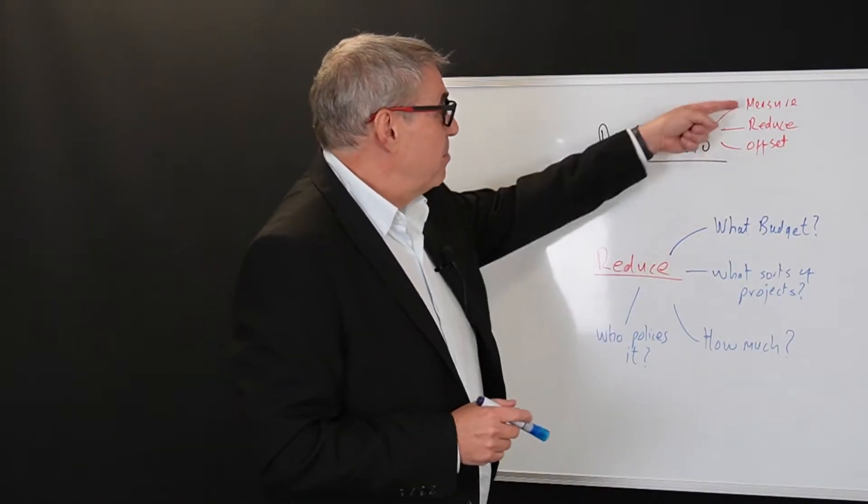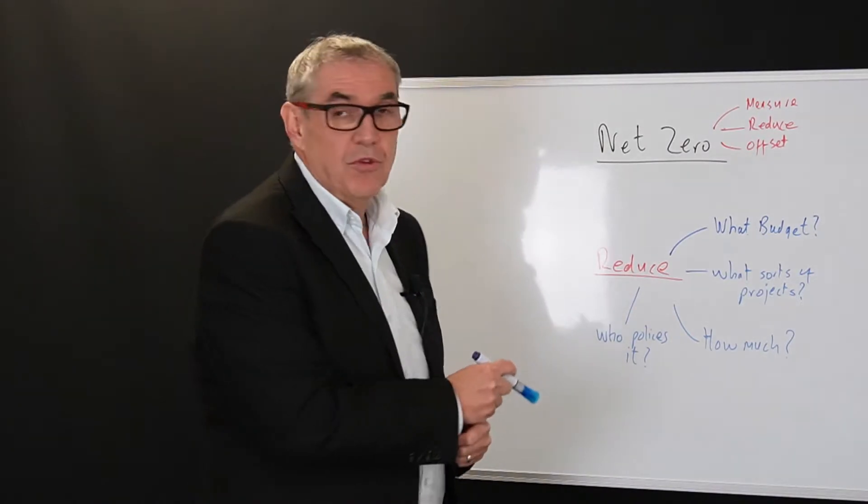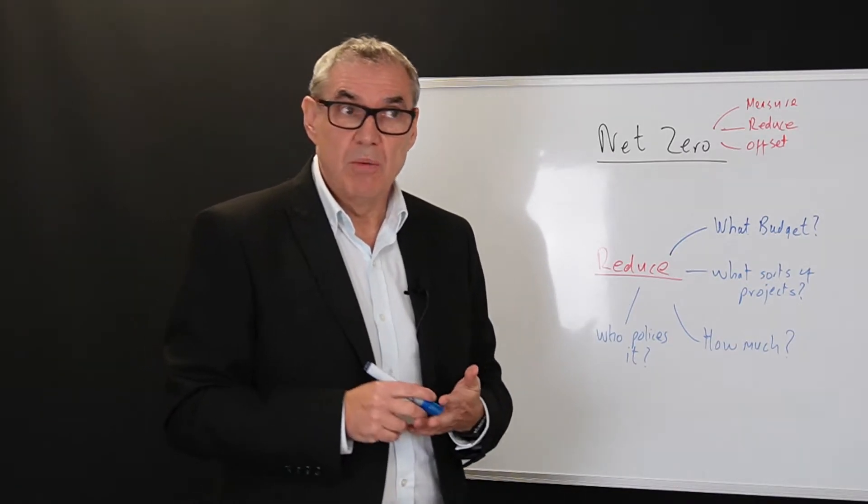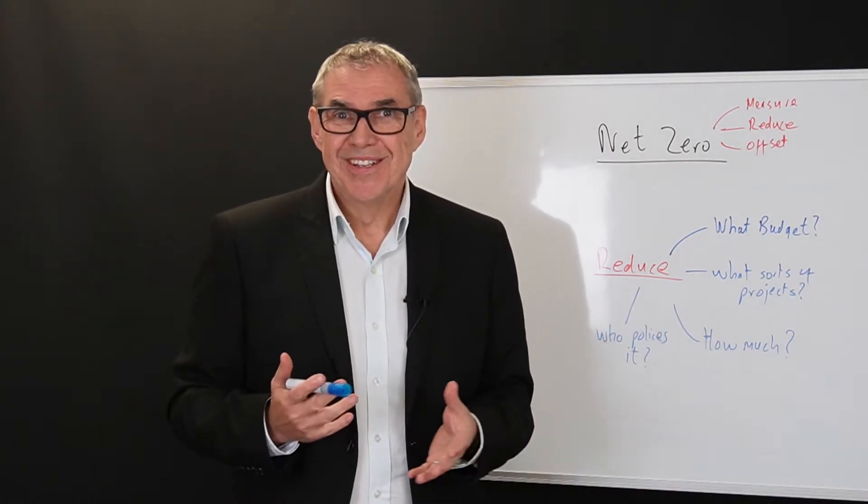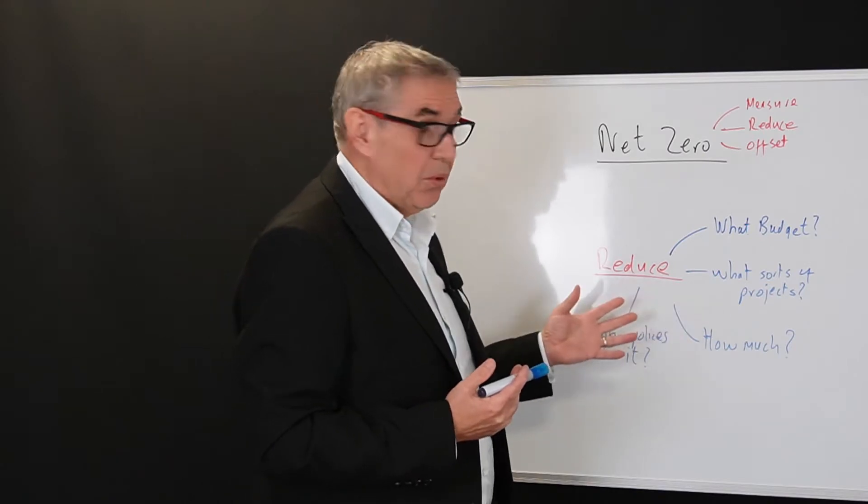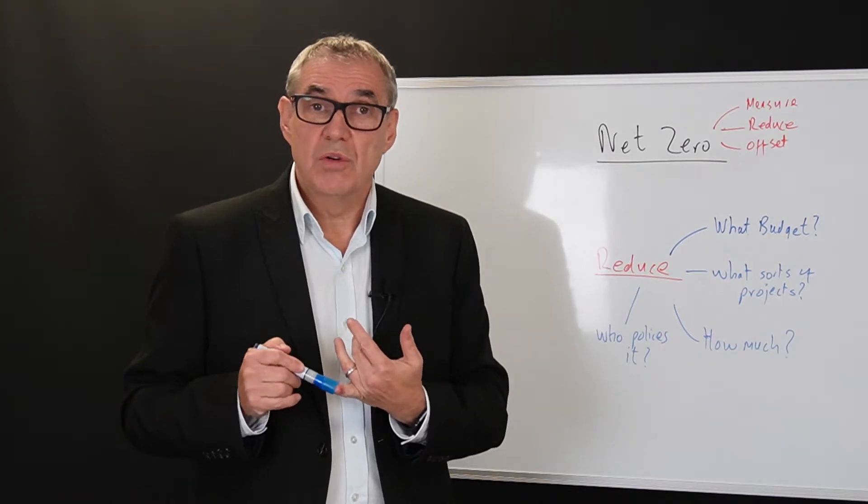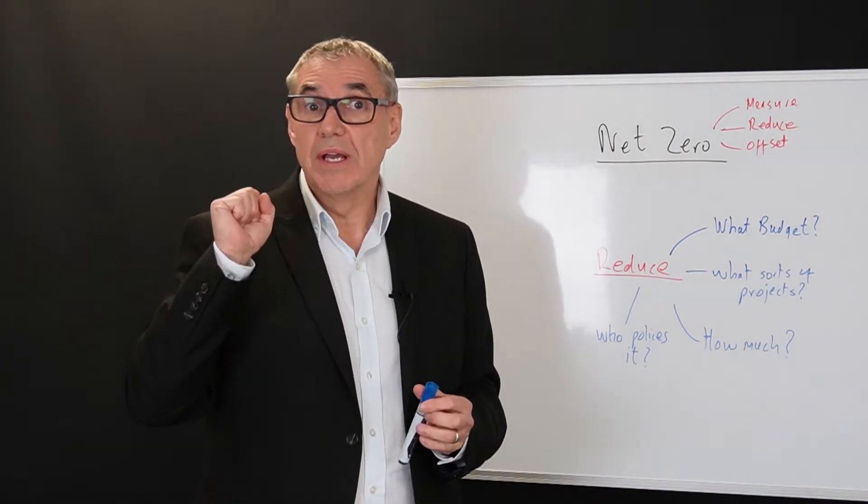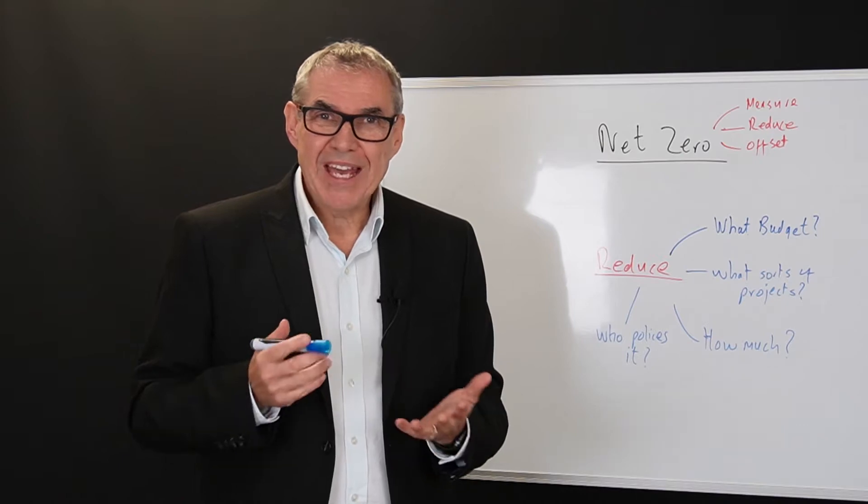Okay. Second step in the process, reduce. So measure, we know what the carbon footprint is. The next step is to actually reduce your carbon use. Challenge number one is there's no standard for what you must do. So a company could, for example, and some of my clients do, they say, we are going to replace our old style lights with new style LEDs. We are therefore reducing our carbon footprint. We're great. Well, that's good. It's good. It's not a bad thing.